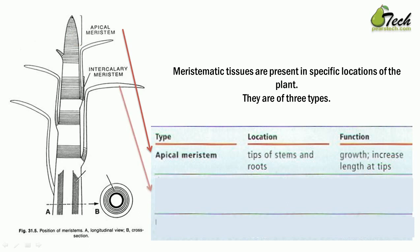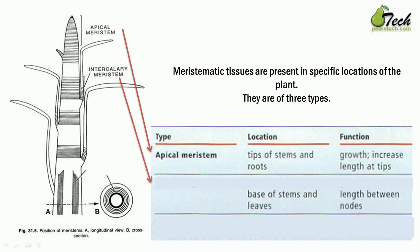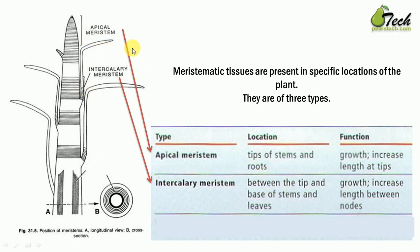The second type is intercalary meristem. You can see there is a node, and the tissue is dividing here. Intercalary meristem is found between the tip and base of stem leaves — where the base of the stem leaves joins the main stem. Growth here increases the length between nodes.